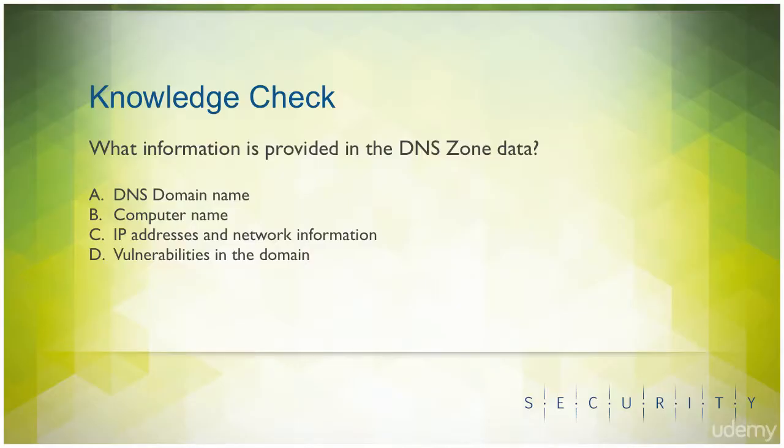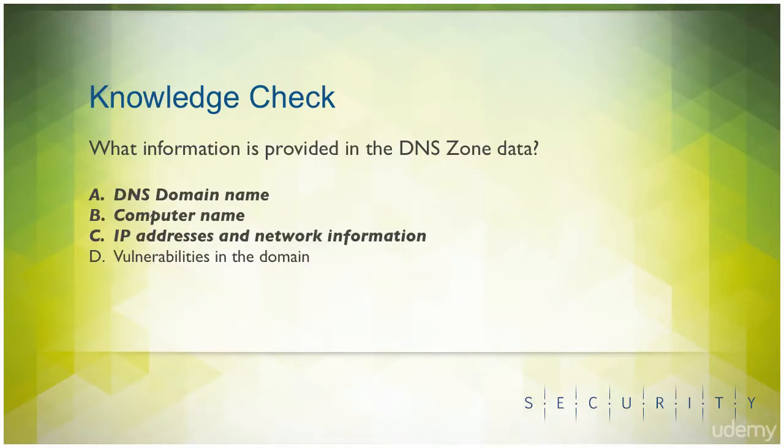It's A, B, and C. That is absolutely correct. DNS lookups, for example, provide information such as DNS domain name, computer name, and IP addresses and network information. You can use tools such as DNS Stuff and databases such as Whois to gather the information. It does not give details of the vulnerabilities, though.